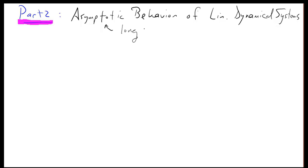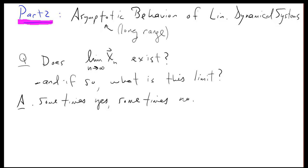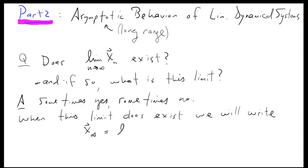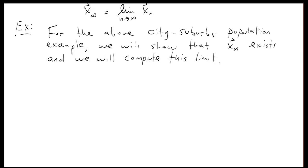In part 2 of this video, we'll consider the asymptotic behavior of linear dynamical systems. Asymptotic means long-range or long-term — what happens over a long period of time? The natural question is whether the state vector has a limit: does it settle down to a stable value? The answer is sometimes yes, sometimes no. When the limiting state vector exists, we write it as x_∞. We will show that the city-suburb population vector has a limiting vector, and we'll call it the equilibrium population vector.